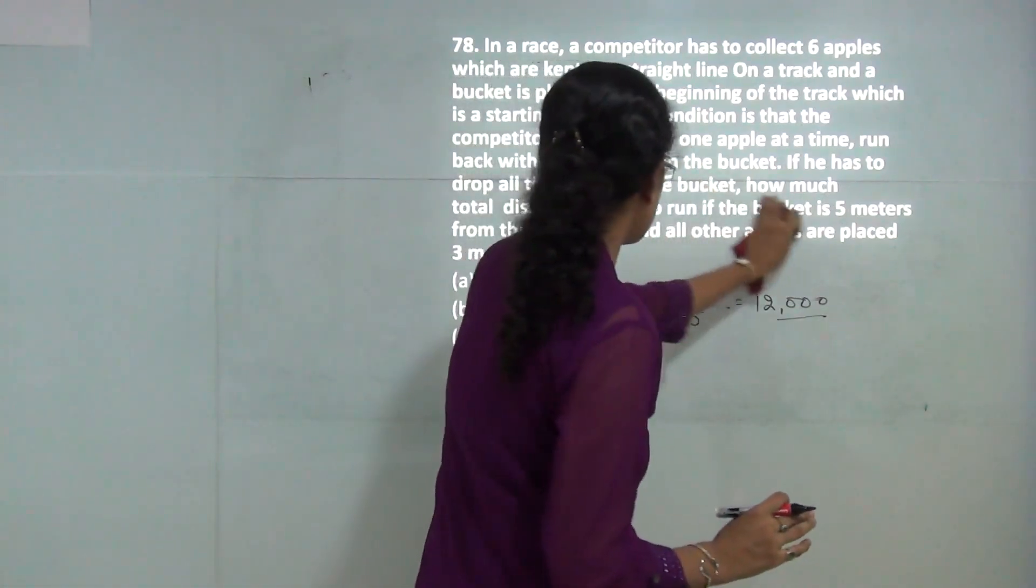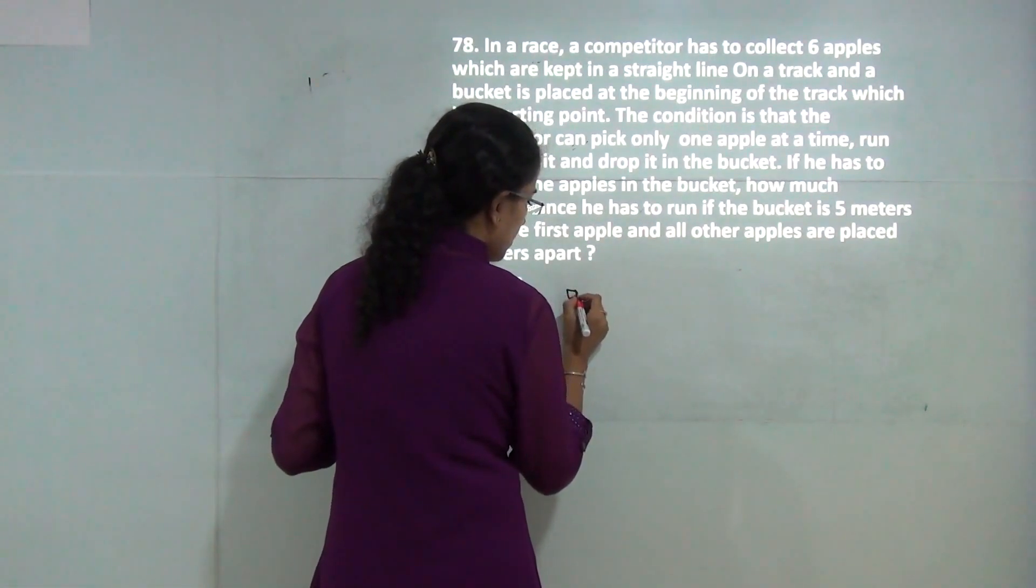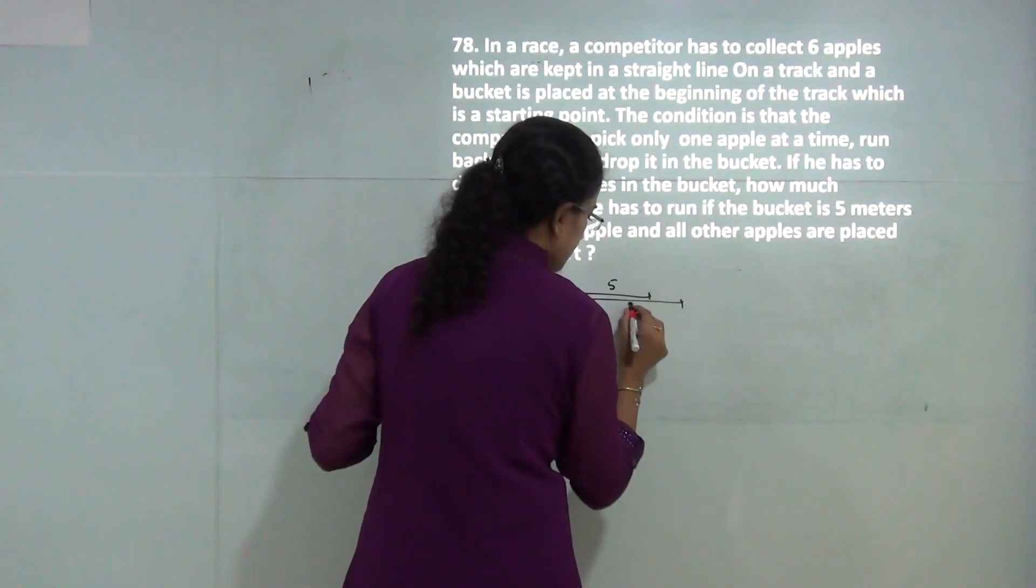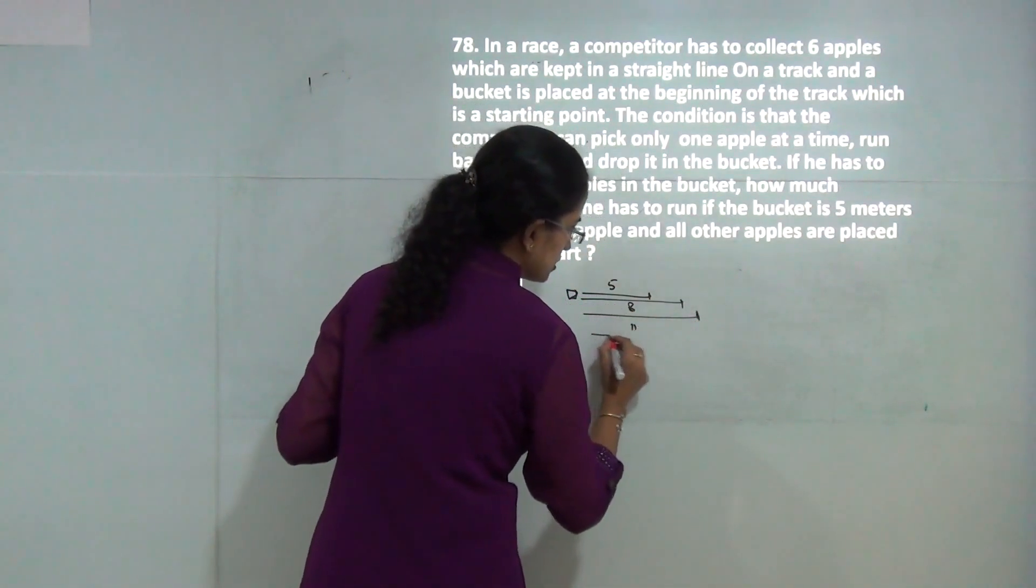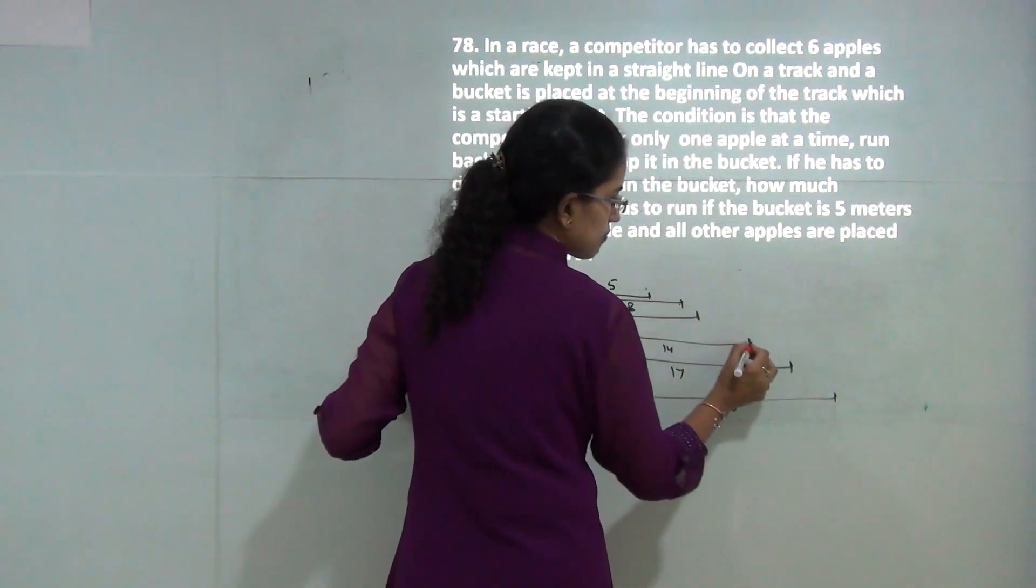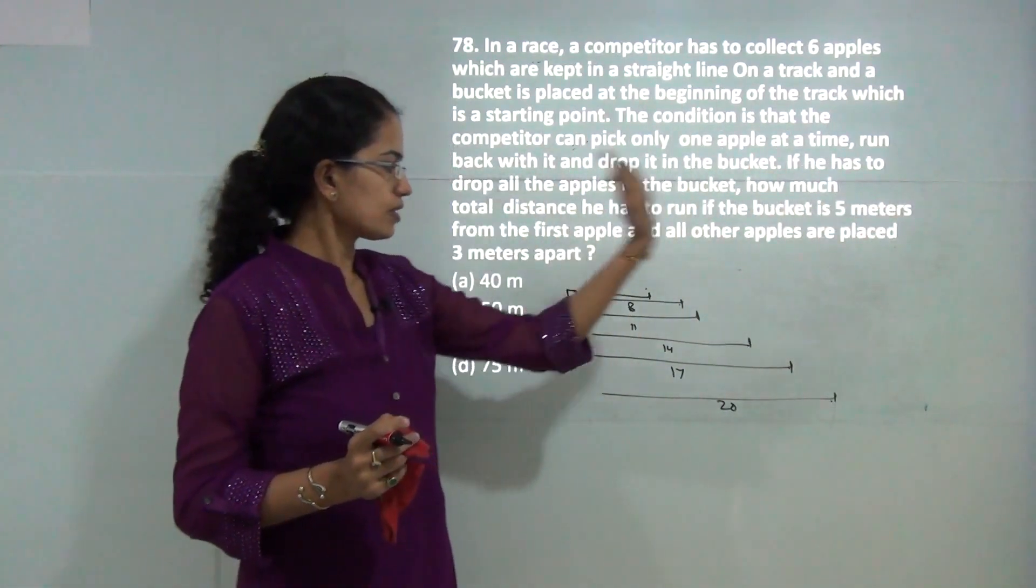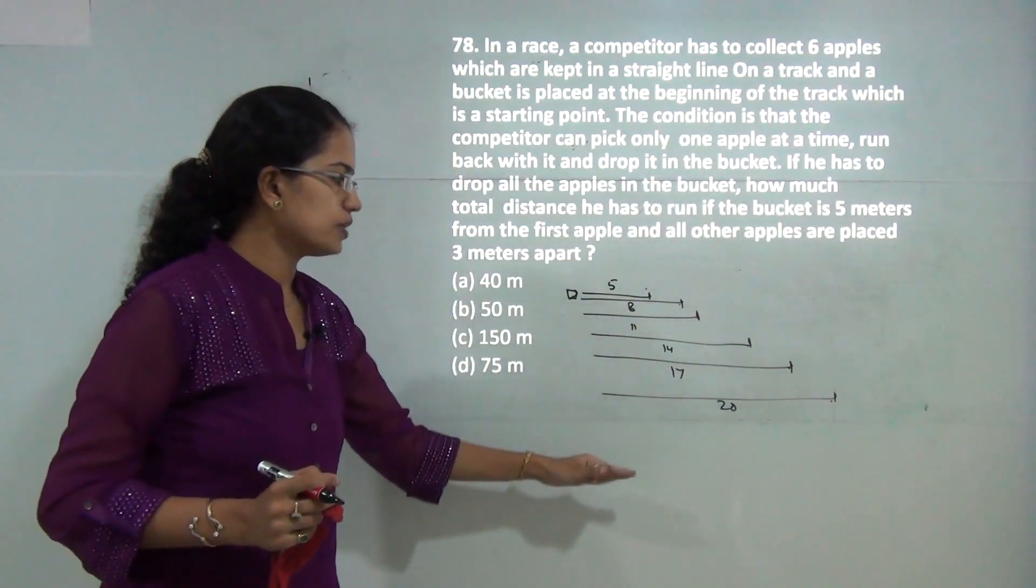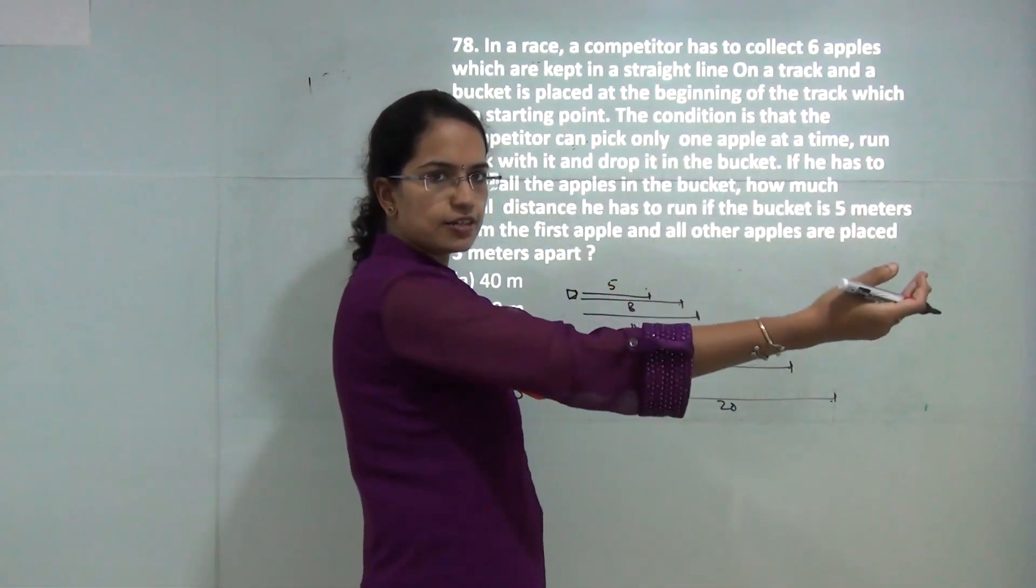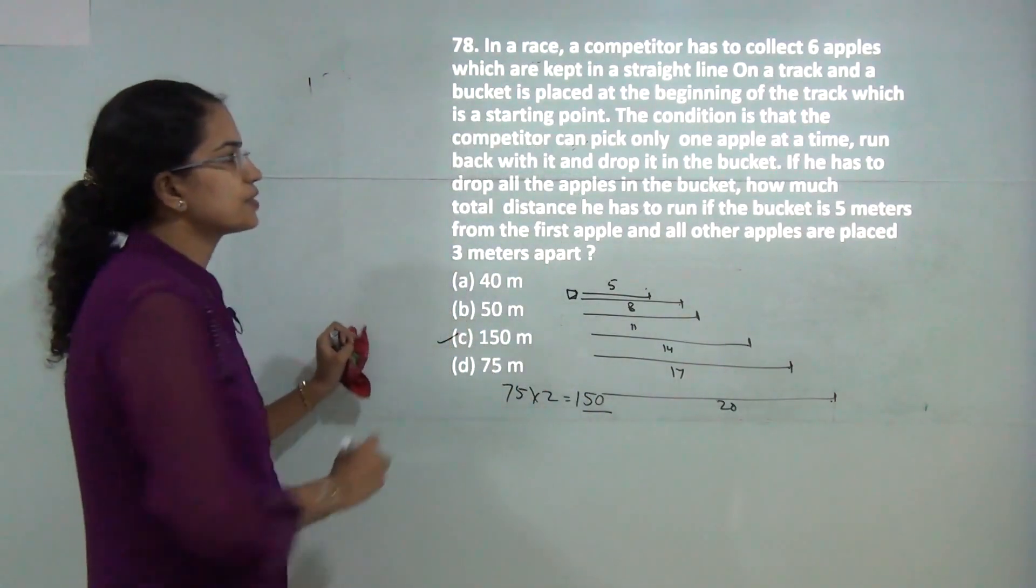A bucket is 5 meters from the first chapel, and chapels are 3 meters apart. The distances are 5, 8, 11, 14, 17, and 20 meters for 6 apples. Each apple requires going and coming back, so we double the distance. The sum of all distances is 75, and multiplied by 2 equals 150 meters total.